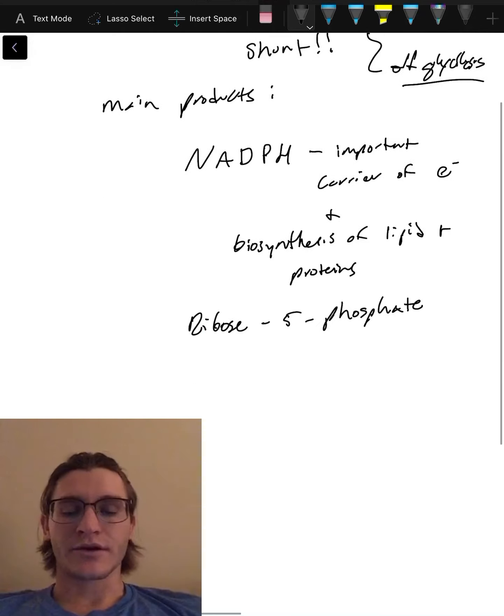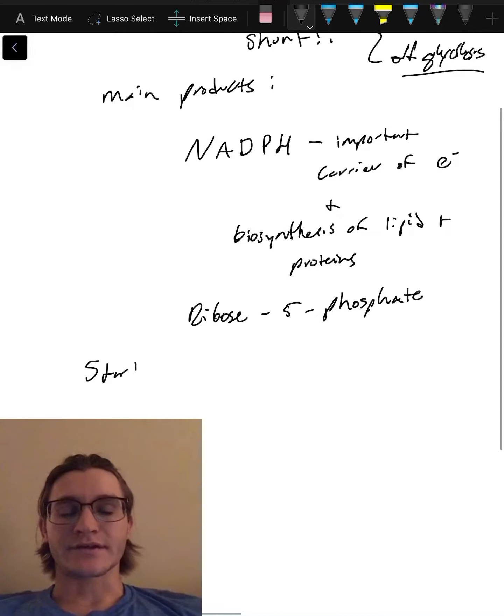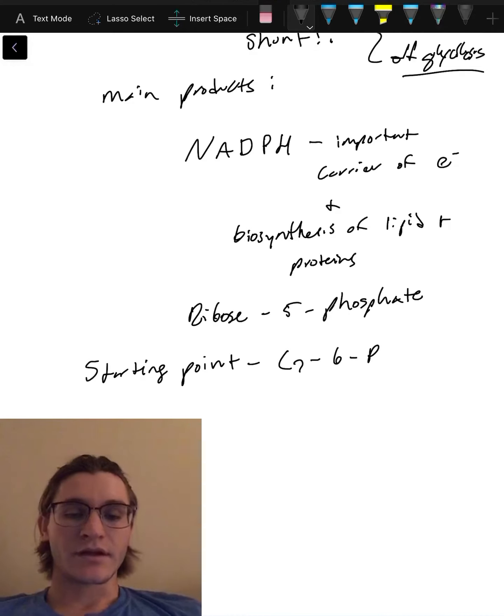This is all occurring in the cytosol. Our starting material and where it's gonna branch off in glycolysis is glucose 6-phosphate. If you're not sure where that is, then check out my glycolysis video where I show you what glucose 6-phosphate is and where that starts at.